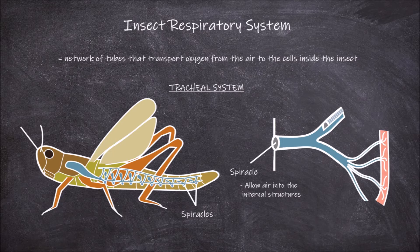This airflow through the spiracles is controlled by muscles near them. They can be contracted to close the spiracle and relaxed to open them and allow airflow to return. Alternating opening and closing of the spiracles helps reduce the water loss that occurs through having them open.